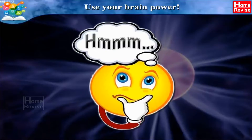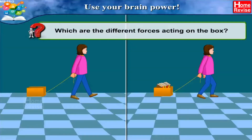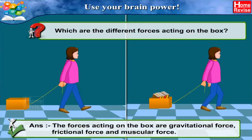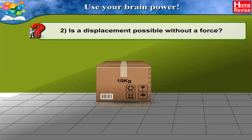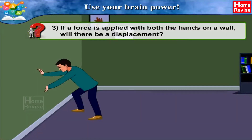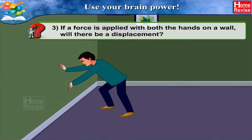Use Your Brain Power. Question 1: In the above activity, which are the different forces acting on the box? Answer: The forces acting on the box are gravitational force, frictional force, and muscular force. Question 2: Is displacement possible without a force? Answer: No, displacement is not possible without a force.